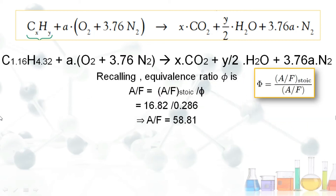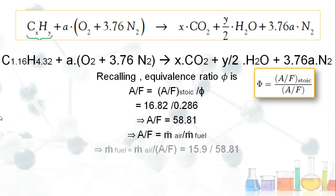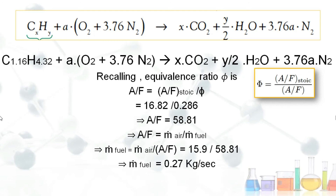The second required value is the fuel mass flow rate. Recalling that A/F = ṁ_air / ṁ_fuel, and since ṁ_air = 15.9 kg/s and A/F = 58.81, we substitute into this equation.